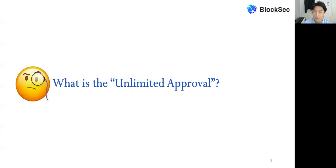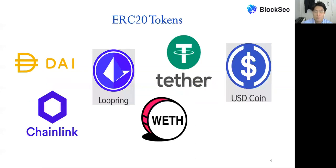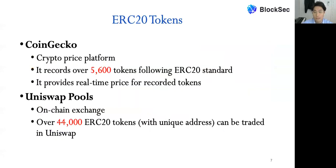What is unlimited approval in Ethereum? Some of you might have heard 'unlimited approval,' 'unlimited allowance,' or 'infinite approval' before. For those not familiar, what is approval in ERC-20 tokens? Many famous tokens like DAI, LRC, USDT, and USDC are all ERC-20 tokens, and there are many more on the Ethereum blockchain. CoinGecko records over 5,600 tokens following the ERC-20 standard, and Uniswap records over 44,000 ERC-20 tokens for users to trade.